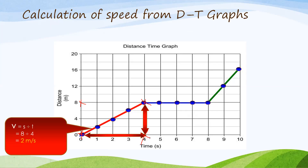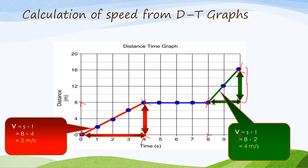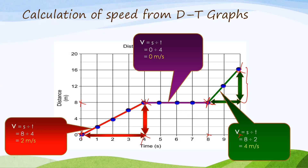The interval from 8 to 10 seconds is represented by the green colored graph. Along the y-axis you have the interval between 8 and 16 meters, so y equals 8. The x value is between 8 and 10, so x equals 2. Speed equals 8 divided by 2 equals 4 meters per second. For the third portion of the graph, there is no variation in the y-direction — it starts at 8 meters and ends at 8 meters, so y equals 0. Speed equals 0 divided by 4 equals 0 meters per second.